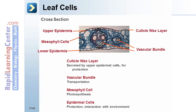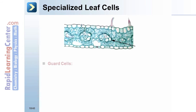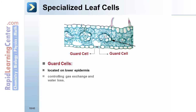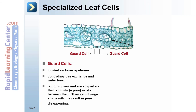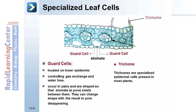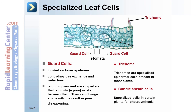Specialized leaf cells include guard cells, located on the lower epidermis, which control gas exchange and water loss. They occur in pairs and are shaped so that a stomatal pore exists between them; they can change shape so that the pore disappears. Trichomes are specialized epidermal cells present in most plants. Bundle sheath cells are specialized cells in certain plants for photosynthesis.